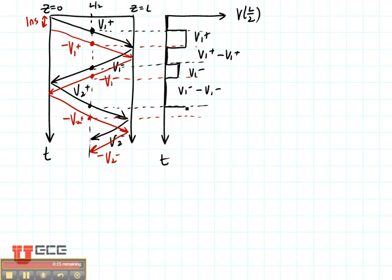Then it's going to step up to V2+. It's actually not going to be as tall as that first one, and then it's going to step back down to zero. So what do you see here? A series of pulses, exactly as you would expect. The pulse going back and forth down the transmission line.